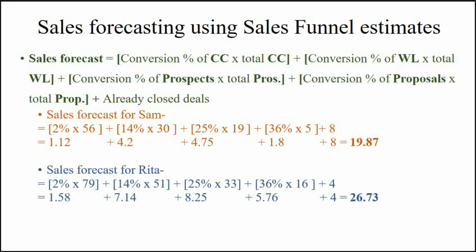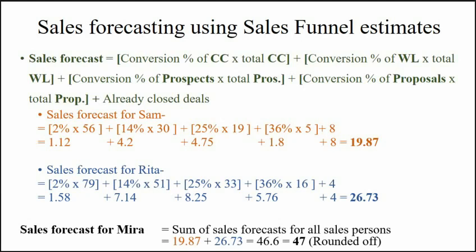When we add all these, we get the sales forecast for Sam. Similarly, we can find the sales forecast for Rita. The sales forecast for their manager Mira is the sum of sales forecasts for both of them. At the end, we round off the final figure, as total sales must be an integer. Note that rounding off is done at the end only to improve the sales forecasting.